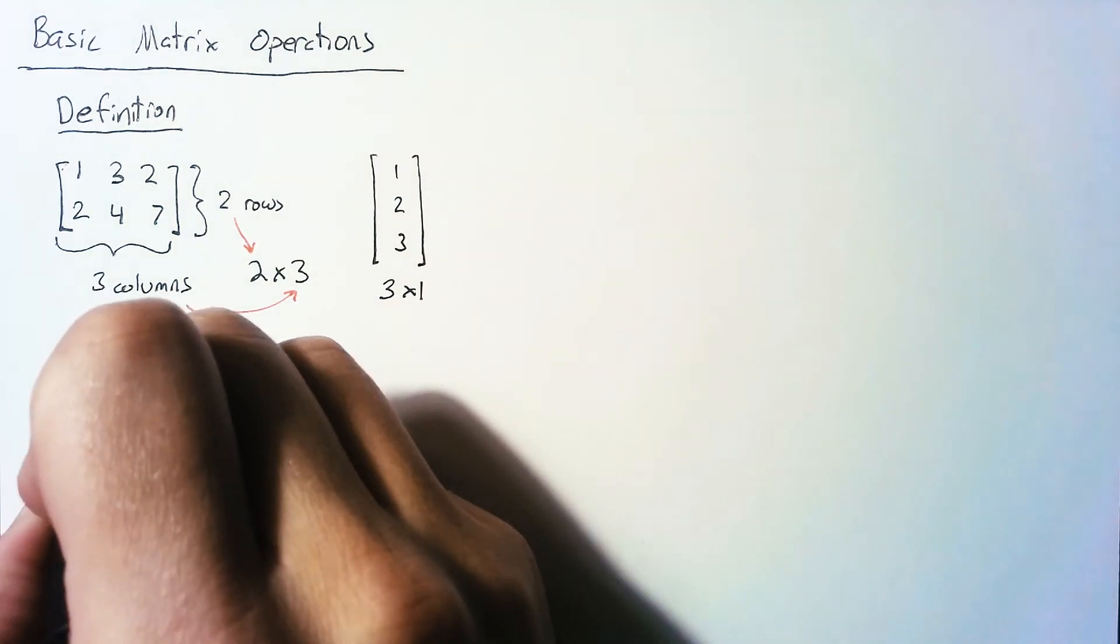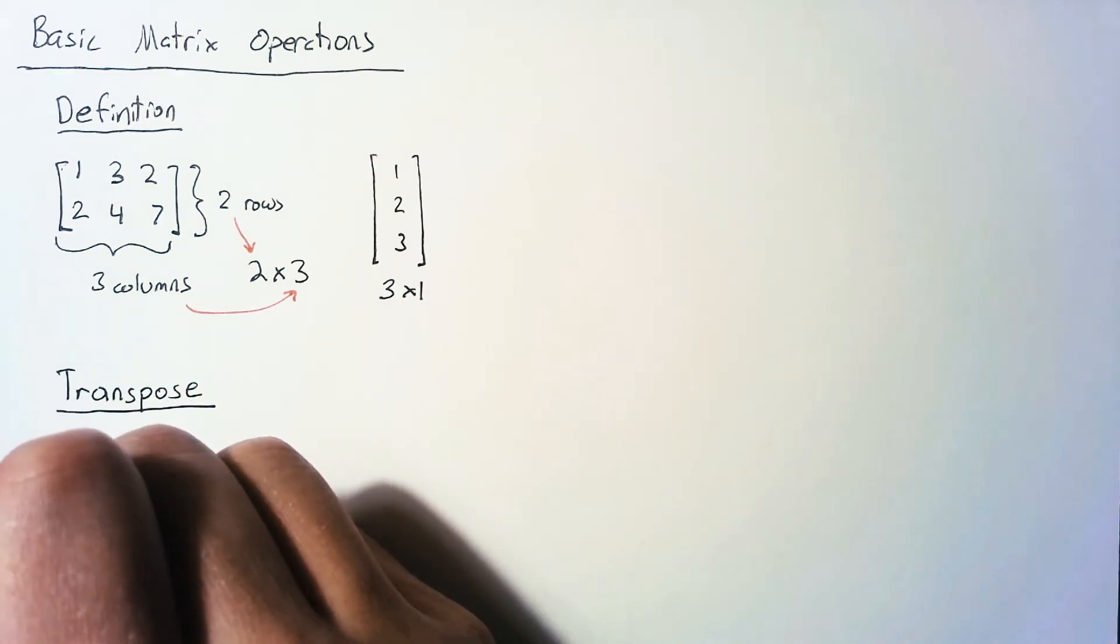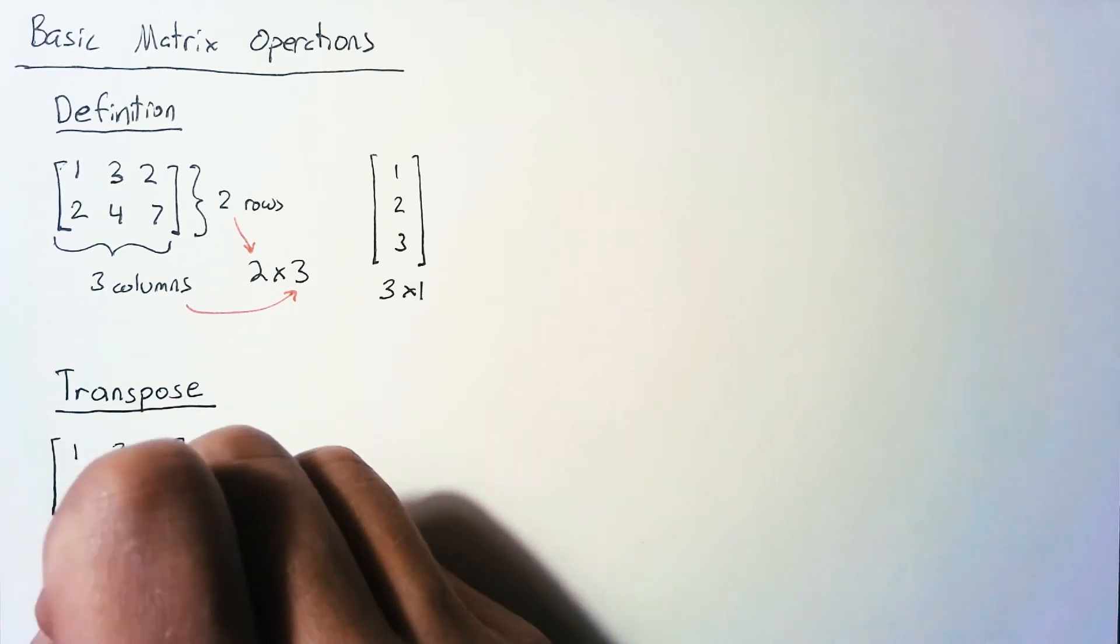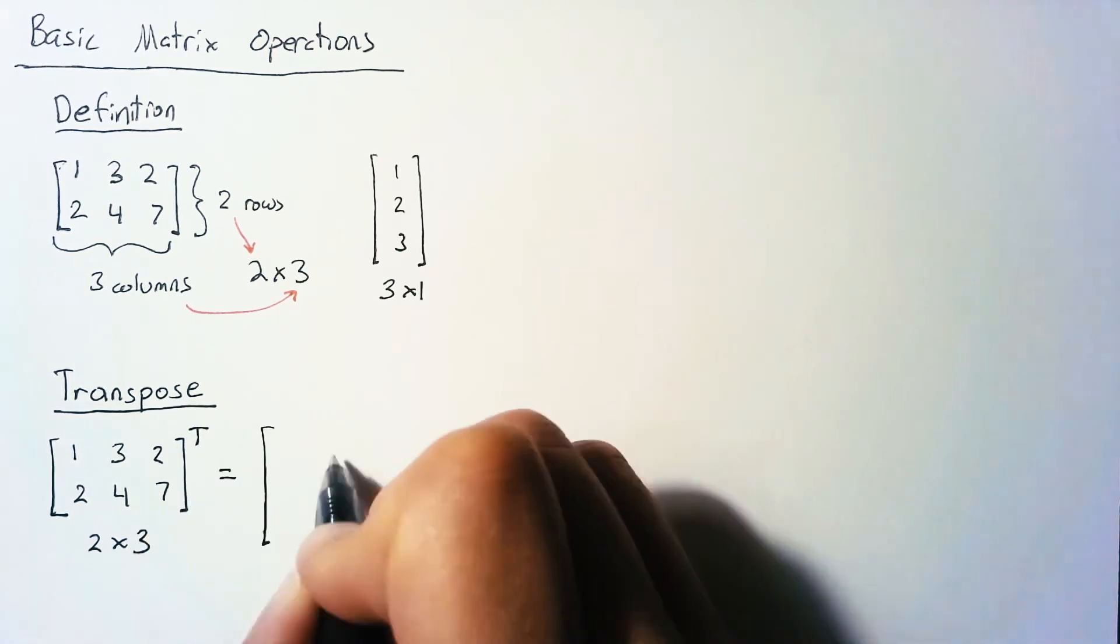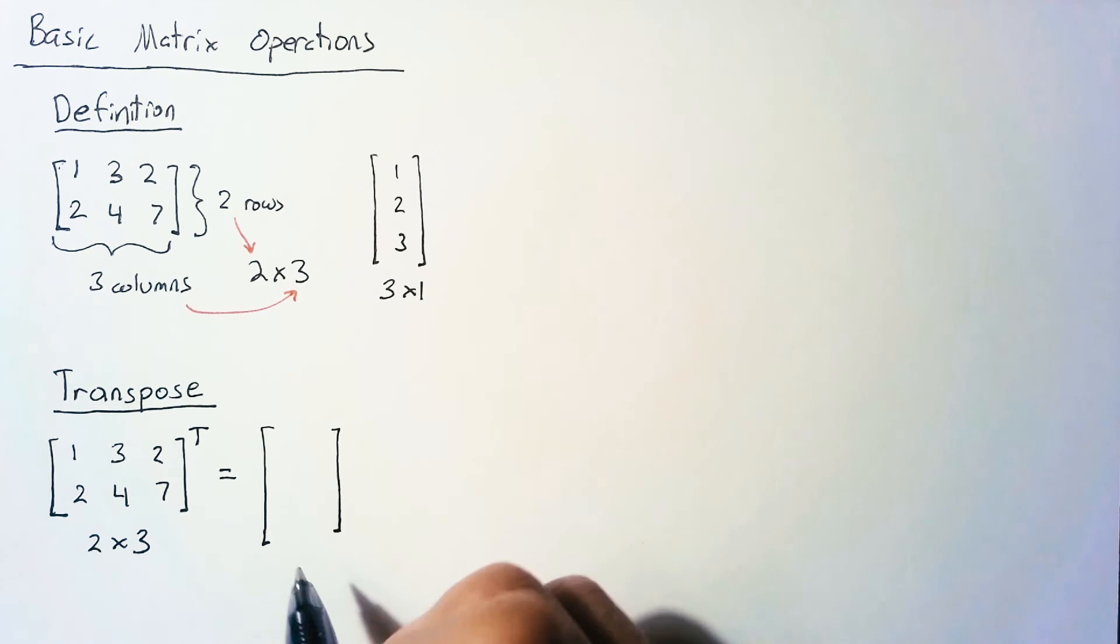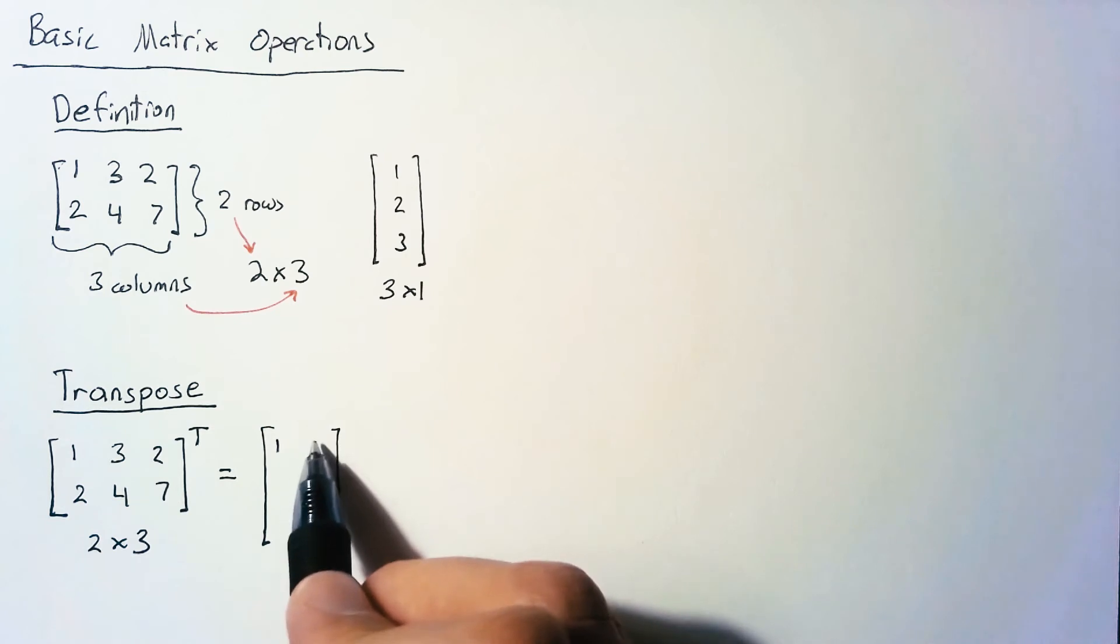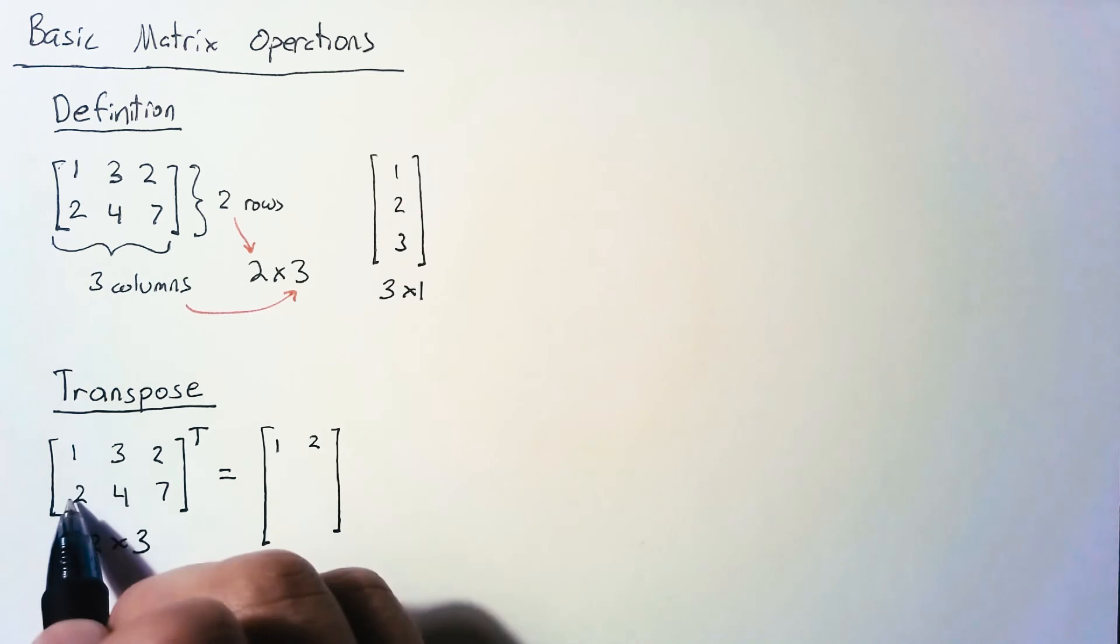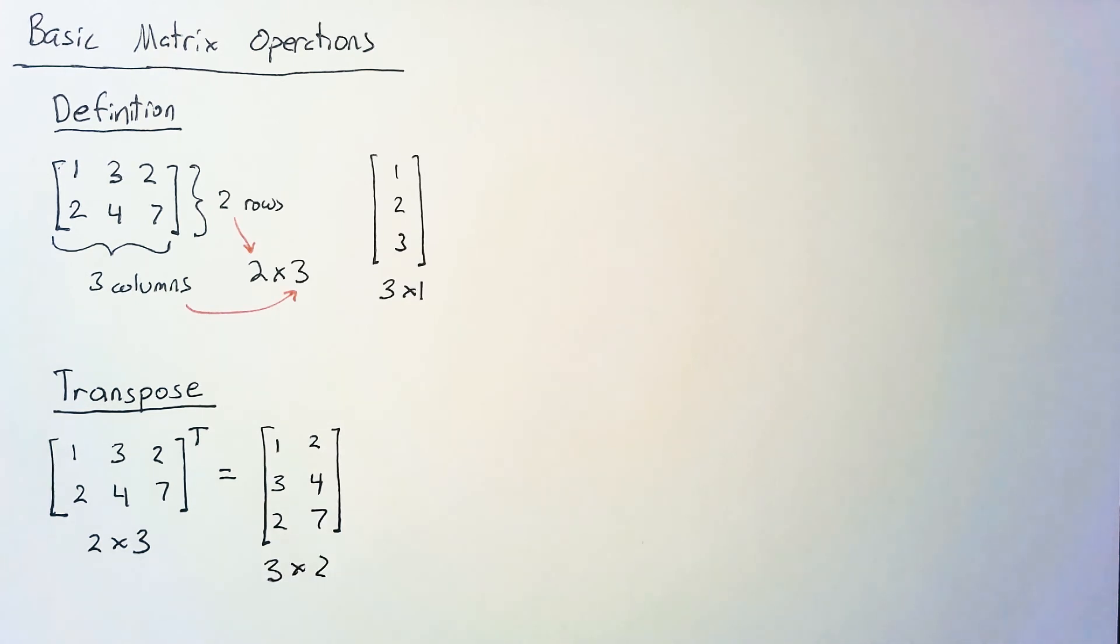The first operation is the matrix transpose, which changes the shape by flipping it. If we have a 2×3 matrix, we can transpose it to get a 3×2 matrix. The first element stays the same, but for the second element in the row, we look to the second element in the column. We get 1 and 2, then 3 and 4, and finally 2 and 7, creating a 3×2 matrix.